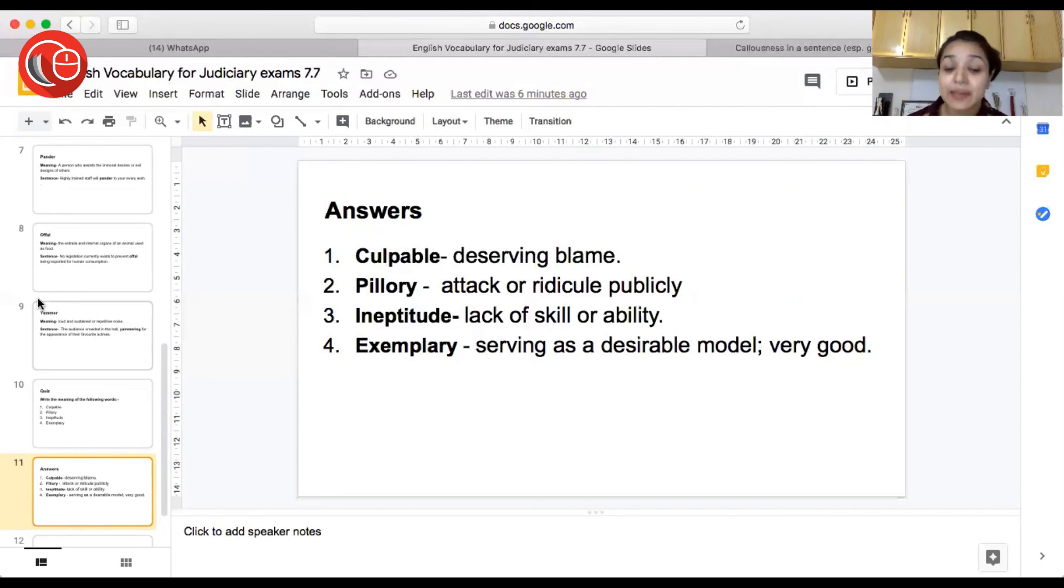The next word is ineptitude. Lack of skill or ability. So somebody who is not so skilled or able to do something, that is called ineptitude. And the next word is exemplary. Serving as a desirable model or very good. So something which is considered as a model for everybody and which is really outstanding. And everybody look upon that thing. So that is called exemplary.